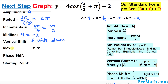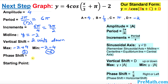Now we want to find the maximum and minimum. Start with the midline value, y equals negative two. Then look at the amplitude, which is four. Add four to get the maximum: negative two plus four equals positive two. Subtract four to get the minimum: negative two minus four equals negative six.